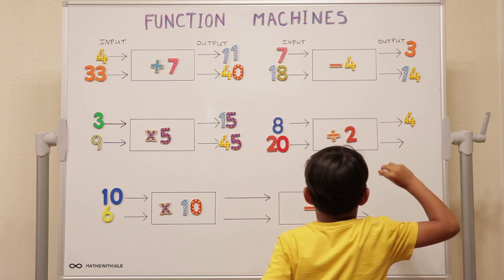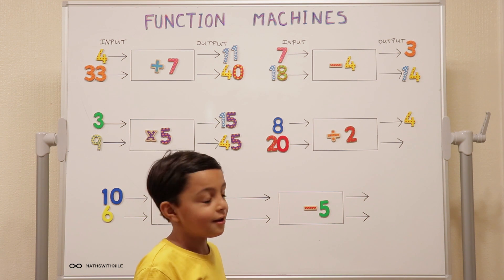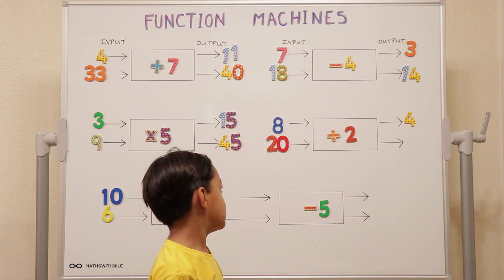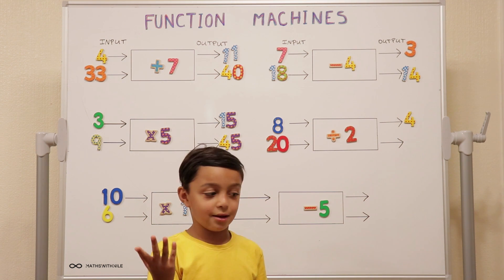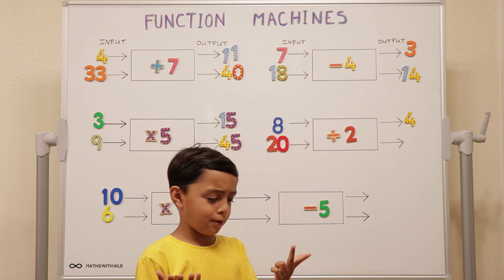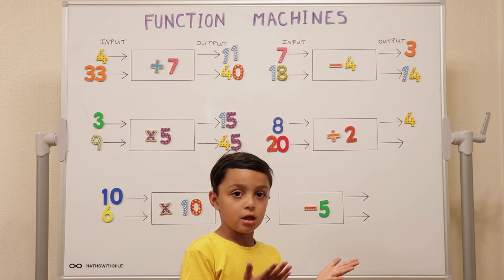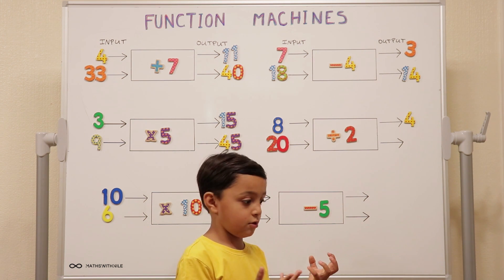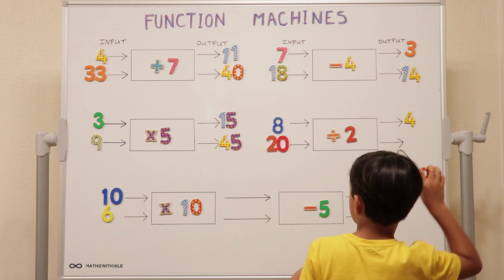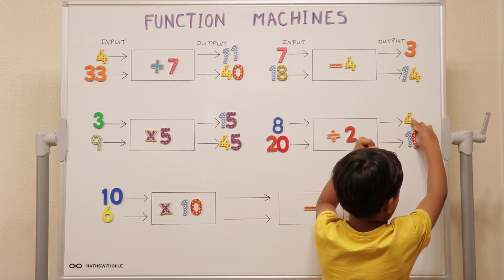What about twenty divided by two? Two, four, six, eight, ten, twelve, fourteen, sixteen, eighteen, twenty. Ten.